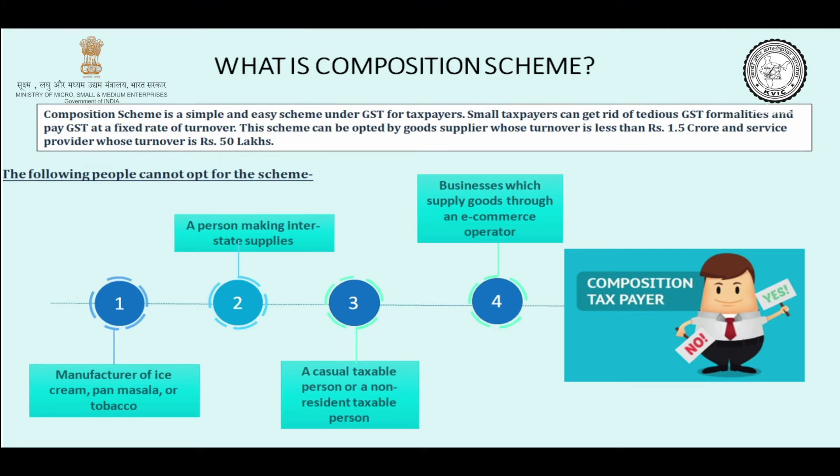Point number three covers casual taxable persons. If I am located in Uttar Pradesh and there is a fair in Mumbai and I go to Mumbai to sell, list, or advertise my product, then I am a casual taxable person in Mumbai. I have to compulsorily get myself registered in Mumbai and I also can't opt for the composition scheme.